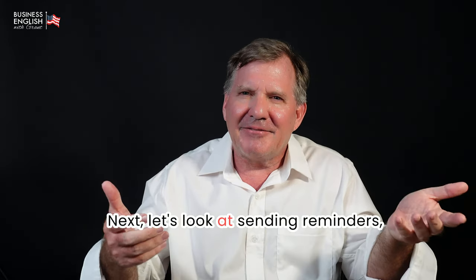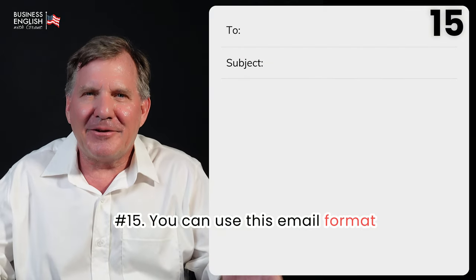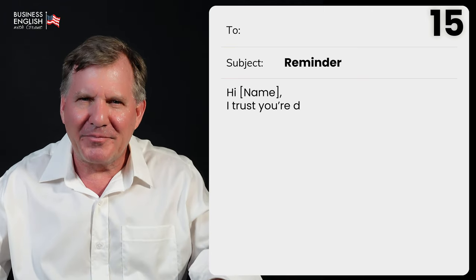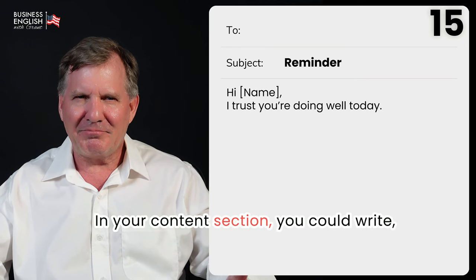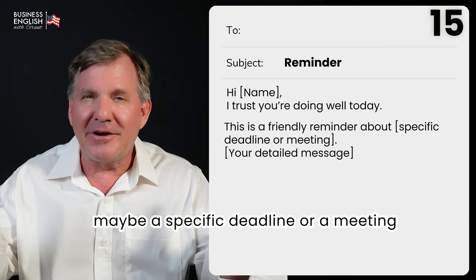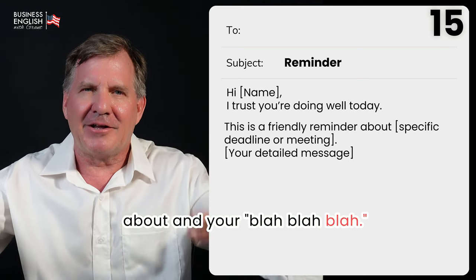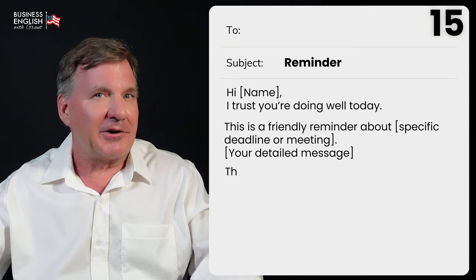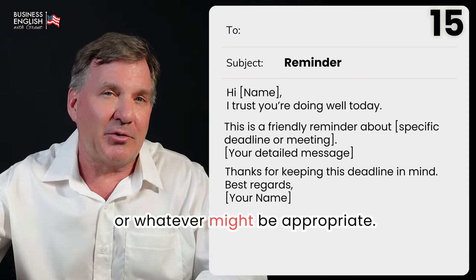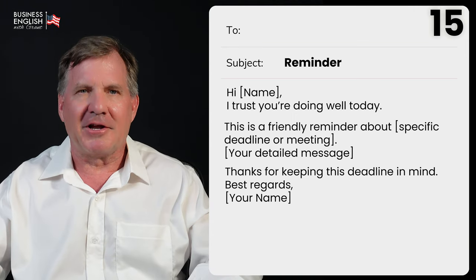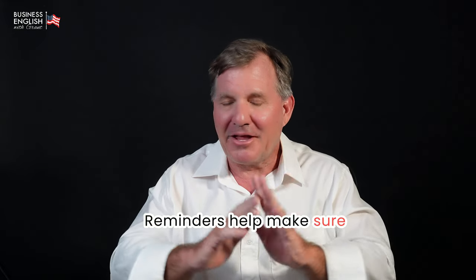Next, let's look at sending reminders — something we need to do often. Number fifteen, you can use this email format when you need to remind someone about something. Beginning: 'Hi John, I trust you're doing well today.' Content: 'This is a friendly reminder about [specific deadline, meeting, or topic].' You probably don't need to give very much information here. Finish: 'Thank you for keeping this deadline in mind,' or 'Thank you for remembering that we're meeting on Tuesday. Best regards, Grant.' Reminders help make sure nothing is overlooked.